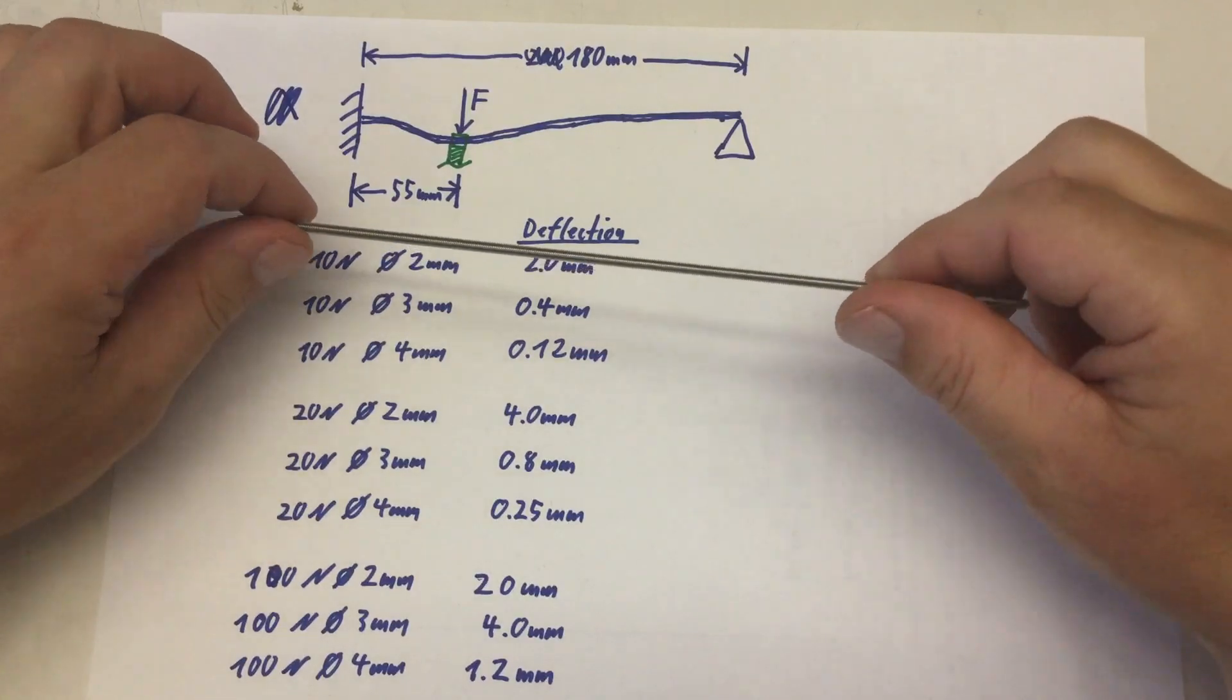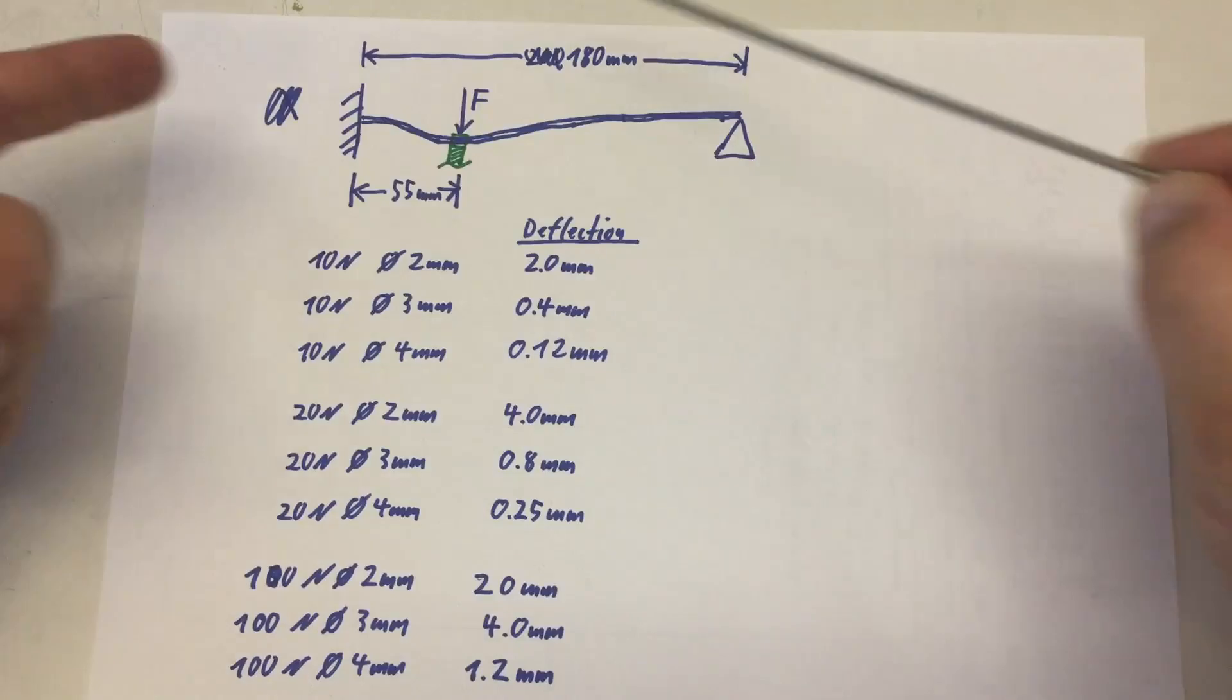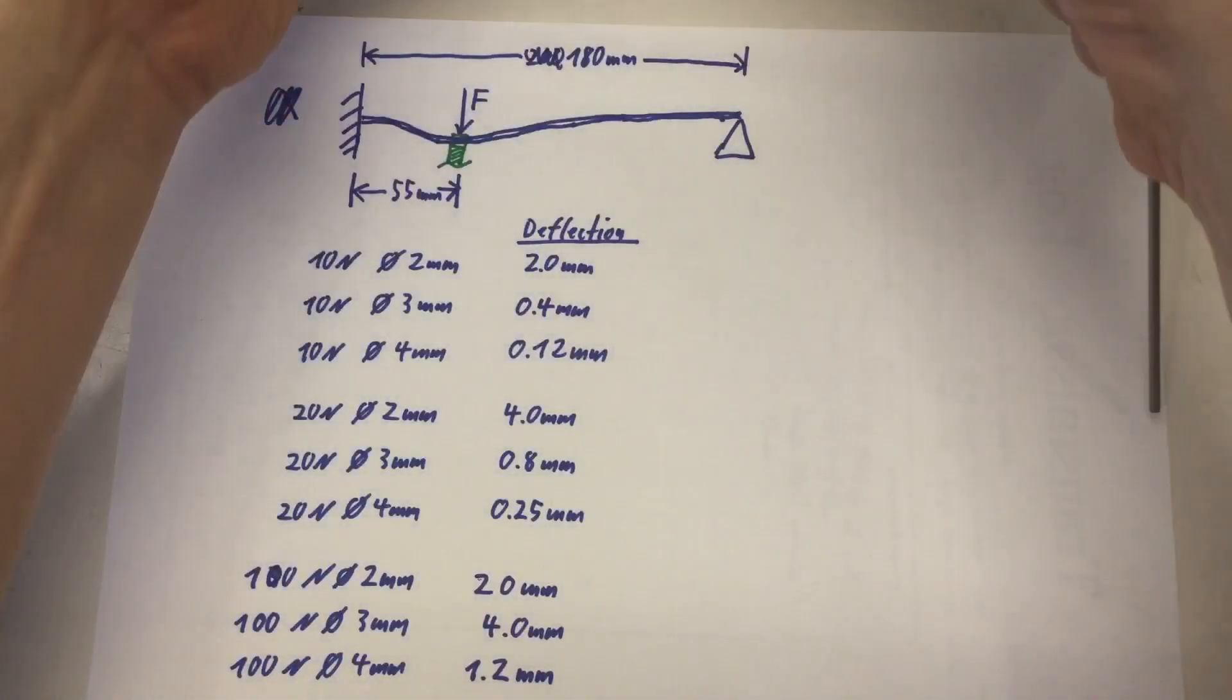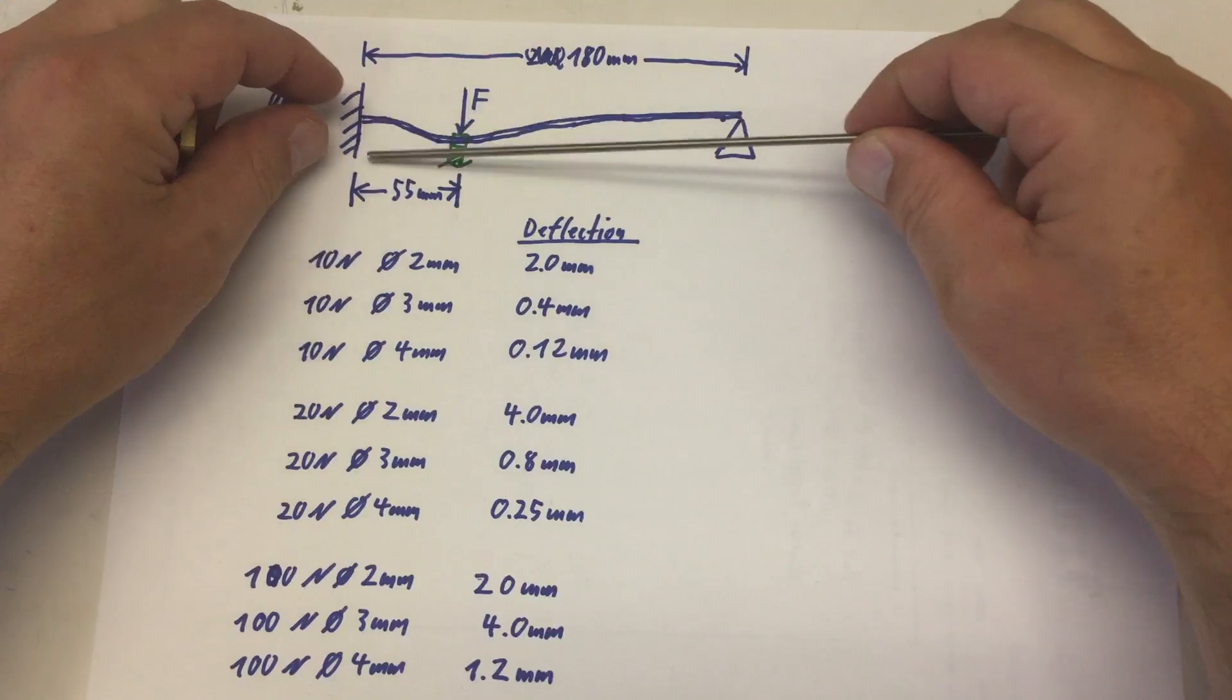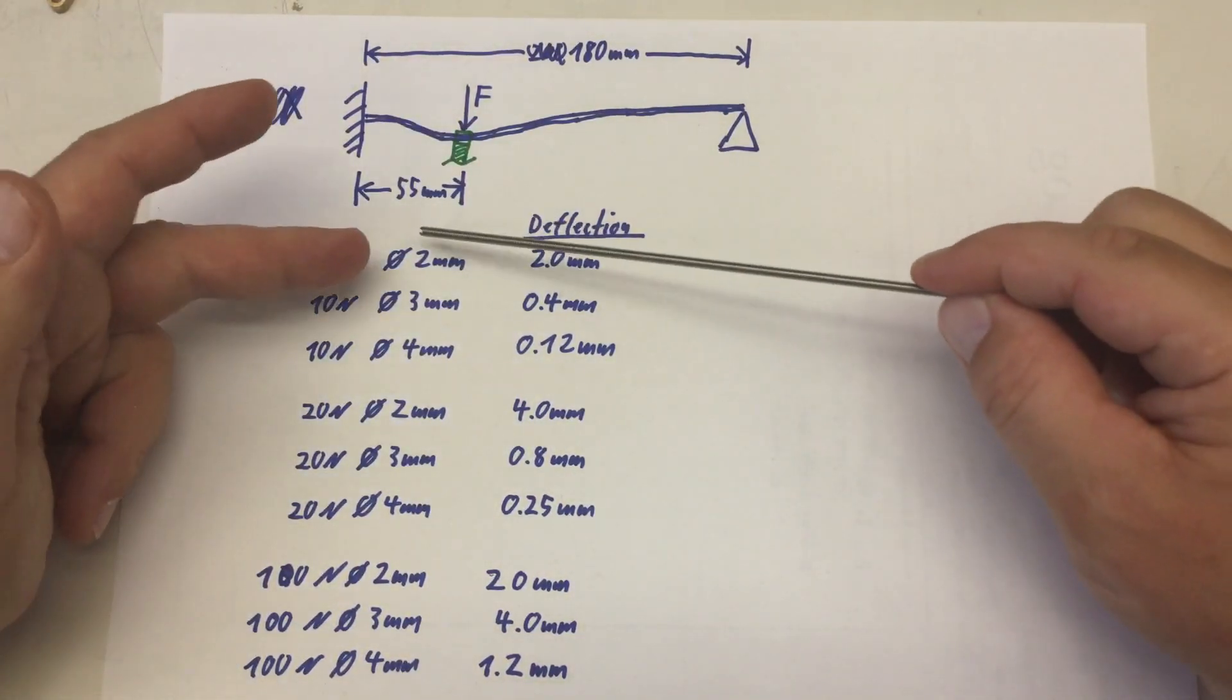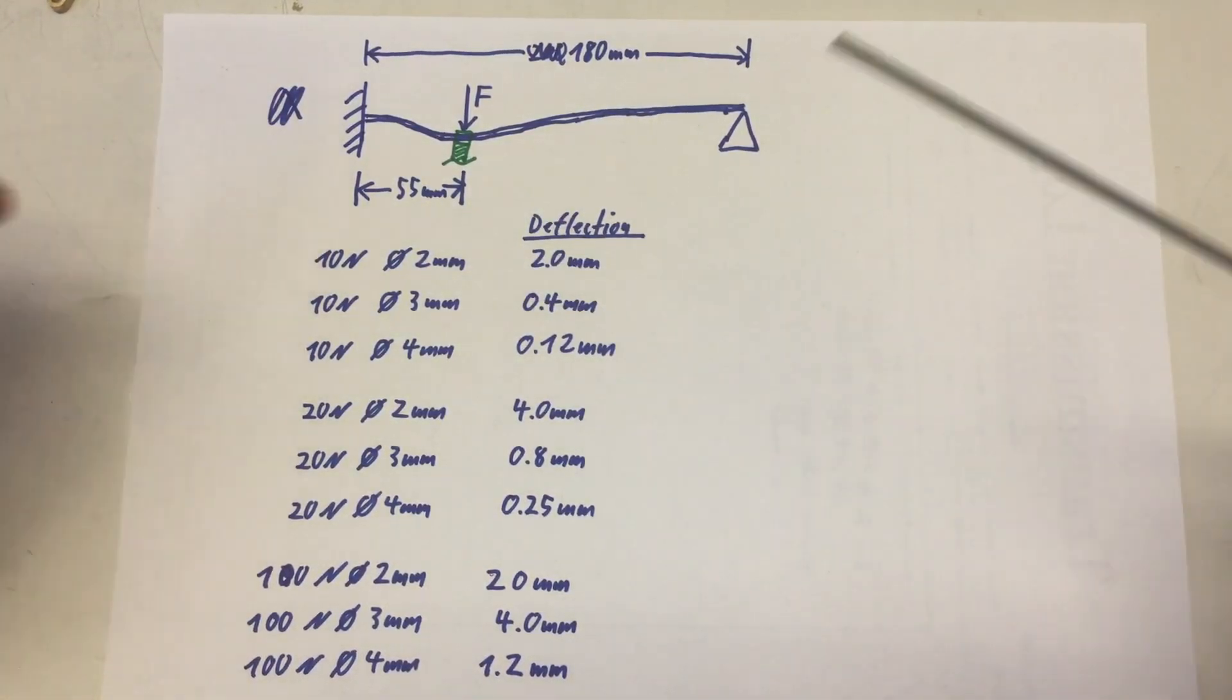Let's first talk about my M3 threaded rod. I put some numbers in an online beam deflection calculator. Just google for it. You find dozens of them. And the numbers were 100 mm beam length. That's the length of my axle here from wall to wall. And 55 mm from one wall where the rod is threaded in. So fixed to my connecting rod here where the force is exerted.